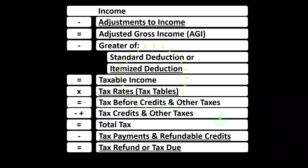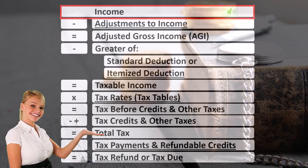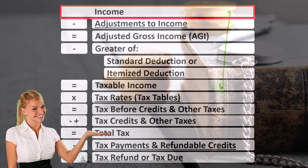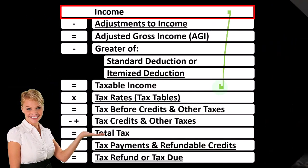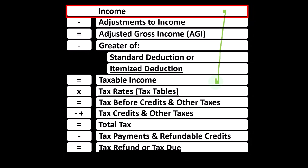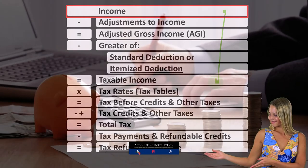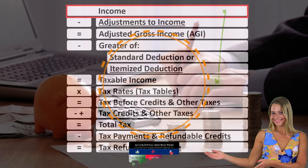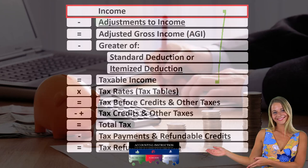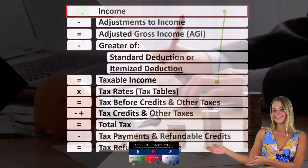Looking at the income tax formula, we're focused on line one income. The first half of the income tax formula is essentially an income statement, just an outline, with other forms and schedules flowing into these line items. One of those is Schedule E, which is essentially an income statement in itself — rental income minus rental expenses — with net rental income flowing into line one income of the tax formula.